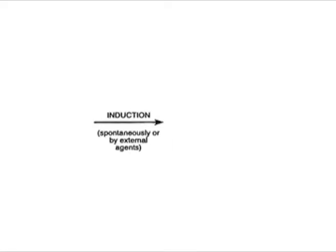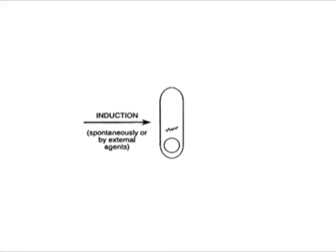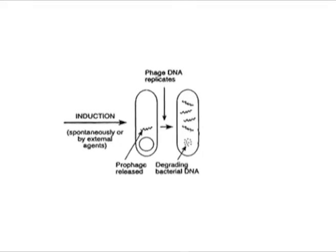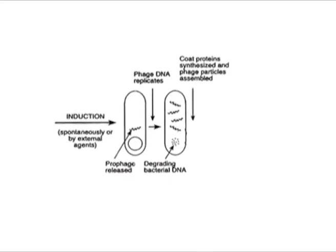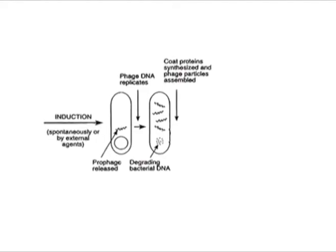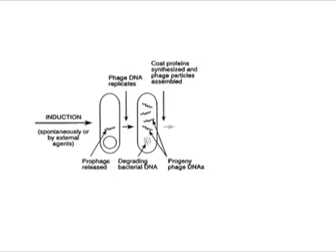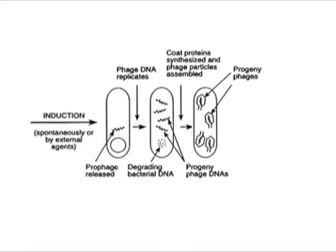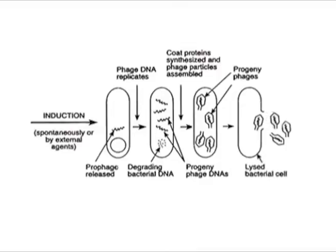In the lytic cycle, once the viral DNA enters the cell, it transcribes itself into the host cell's messenger RNAs and uses them to direct the ribosomes. The host cell's DNA is destroyed and the virus takes over the cell's metabolic activities, using cell metabolism for its own multiplication and producing progeny phages. Replication takes place at a faster rate and the cell is filled with 100 to 200 new viruses. As the cell becomes overcrowded, the virus releases an enzyme to break the cell wall, which then bursts, releasing new viruses. This process is termed lysis. In short, the lytic cycle shuts down the host cell machinery and destroys it.